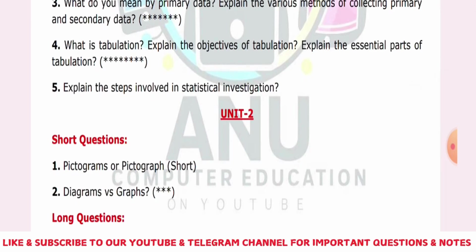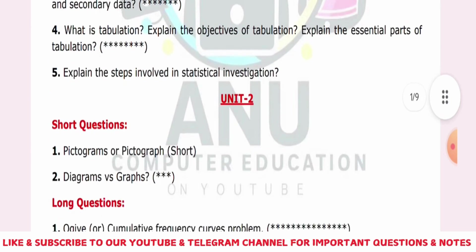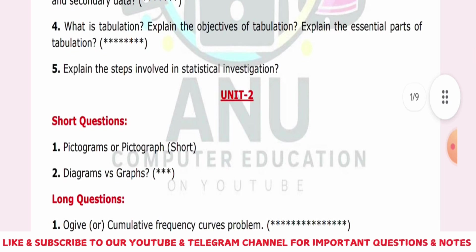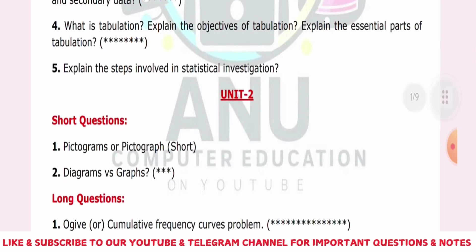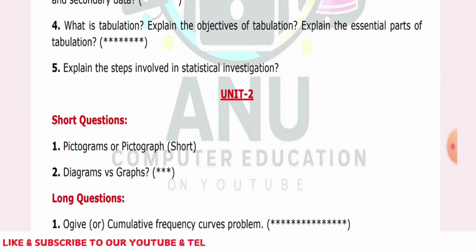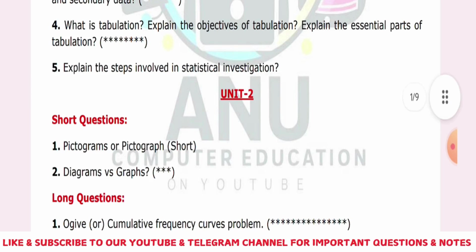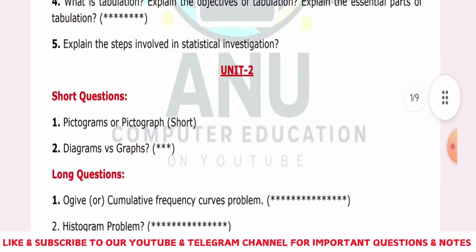Histogram is an important problem. Ogive is a two important topic. There are different diagrams like bar diagram, sub-divided bar diagram, multiple bar diagram, percentage bar diagram, and pie chart. There are also histograms, ogive, and frequency polygons. These two topics are very important questions.